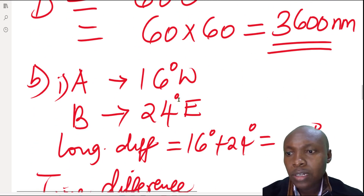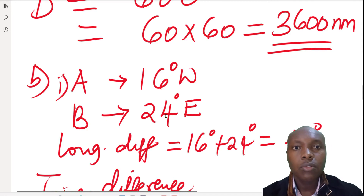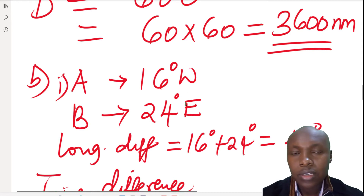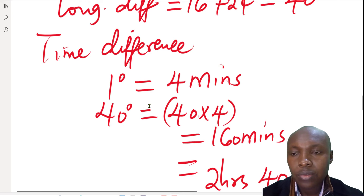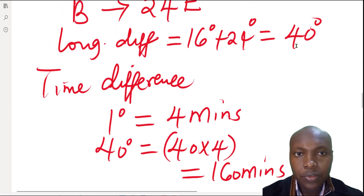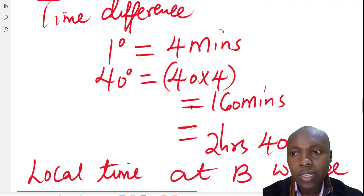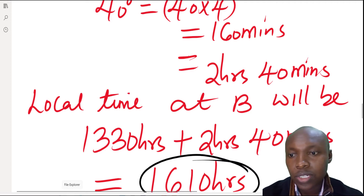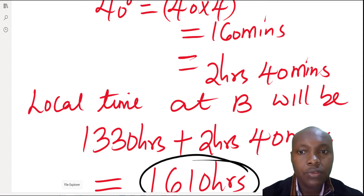When calculating time differences, we use longitudes. A is at 16 degrees west and B is at 24 degrees east, so the longitude difference is 16 + 24 = 40 degrees. Since every 1 degree corresponds to a 4-minute time difference, 40 degrees gives 160 minutes, which equals 2 hours and 40 minutes.